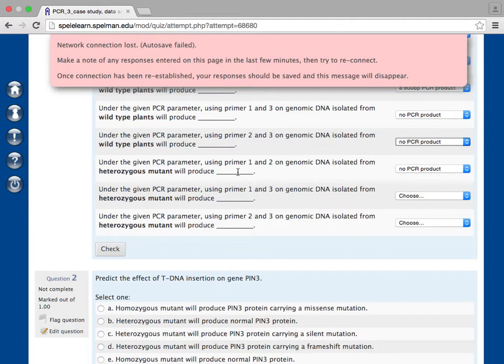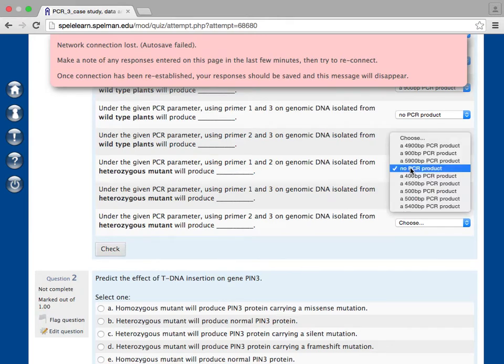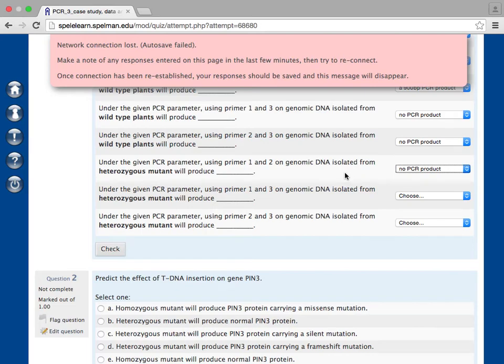On heterozygous using 1 and 3. Using a given, from 1 and 3 on genomic DNA, heterozygous mutant. This should give 2 bands though. Can you check more than 2 choices?